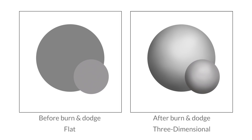Let's take a look at how effective that can be with this graphic. The images shown here are exactly the same — the only difference is that the image on the right has had burning and dodging applied to it, creating a three-dimensional feel to what is originally a two-dimensional image. Both are still two-dimensional images but one of them has a very much more three-dimensional appearance.